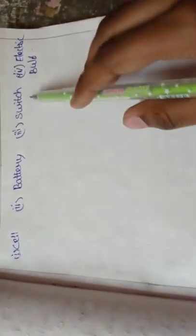First one is cell, next one is battery, switch, electric bulb. I want to tell you about first cell.